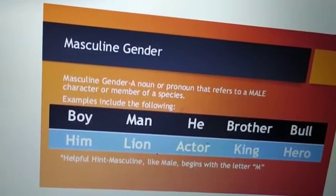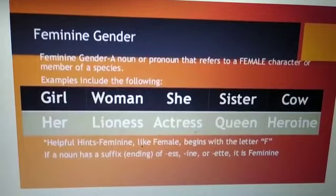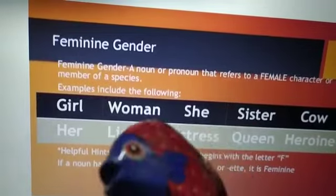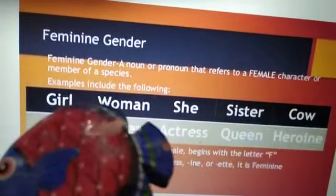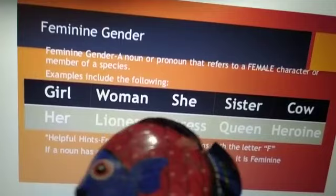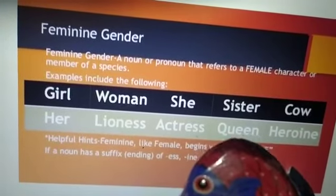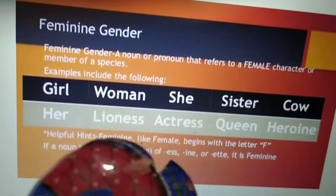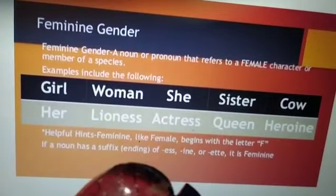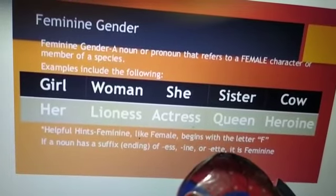Masculine belongs to the male and begins with the letter M. Feminine gender: a noun or pronoun that refers to a female character or member of a species. Examples include: girl, woman, she, sister, cow, her, lioness, actress, queen, heroine. Helpful hint: feminine, like female, begins with the letter F. If a noun has a suffix ending of -ess, -ine, or -ette, it is feminine.